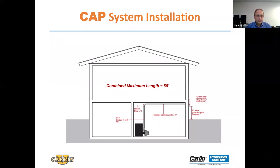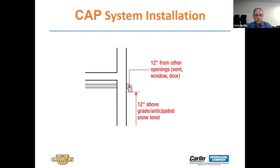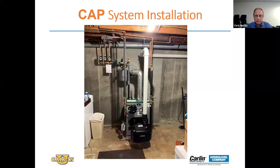Installation instructions specify that the maximum length of run — including all 90-degree elbows and 45-degree bends — is 80 linear feet. There are instructions on locating the inlet piece away from snow grade. This is important because if that intake becomes blocked, you will have a lockout and it's against code. Maintaining 12 inches above anticipated snow level is important, as is keeping 12 inches from any other opening so you don't introduce air being exhausted from any opening in the house.